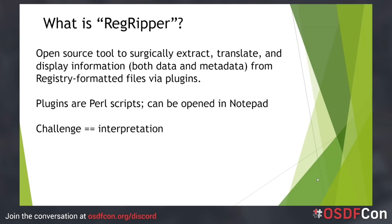I say "registry-formatted" because RegRipper works equally well on files that comprise the registry — such as the software and system hives — as well as similarly formatted files that are not part of the registry, such as the AmCache file and application-specific settings.dat files. RegRipper is written in Perl and uses a Perl module that does not rely on Windows API calls. As a result, RegRipper can be run on any platform that supports the Perl scripting language.